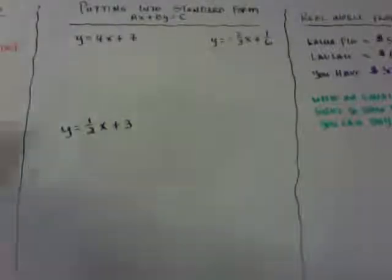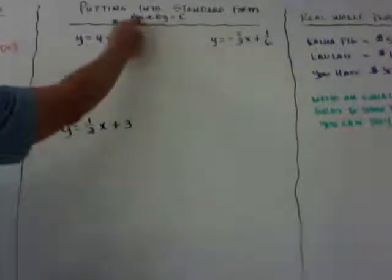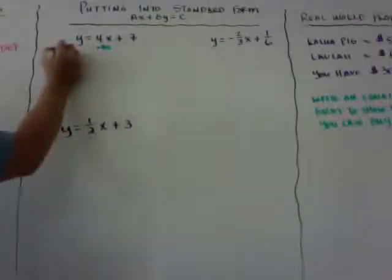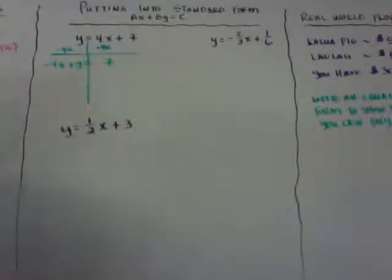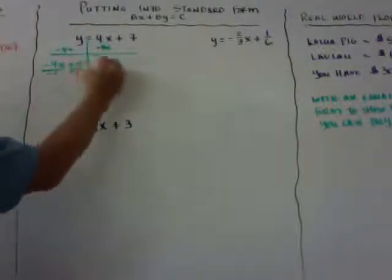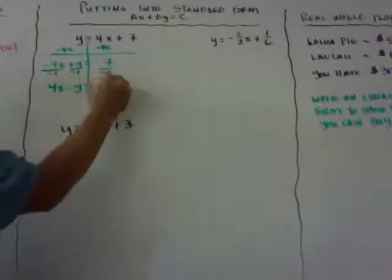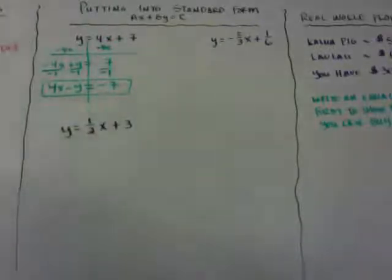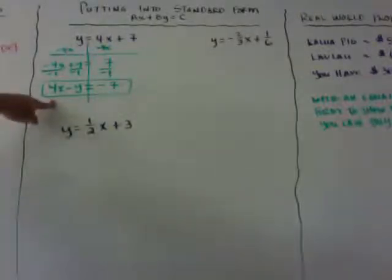The way you do that is rearrange it to ax plus by equals c, and then change them into integers. The x is on the right side of the equal sign and I need it on the left, so I subtract 4x from both sides. That gives me negative 4x plus y equals 7. Now I check: are they integers? Yes. Rule two: a must be positive, so I multiply everything by negative 1, getting 4x minus y equals negative 7.